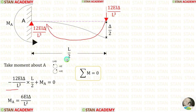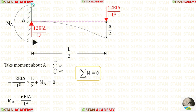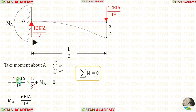The distance is L/2. Let us assume that MA is acting in the anticlockwise direction. So, it will be positive. We can eliminate this term, and here it will be 6. Also, we can eliminate L — here it will be square.